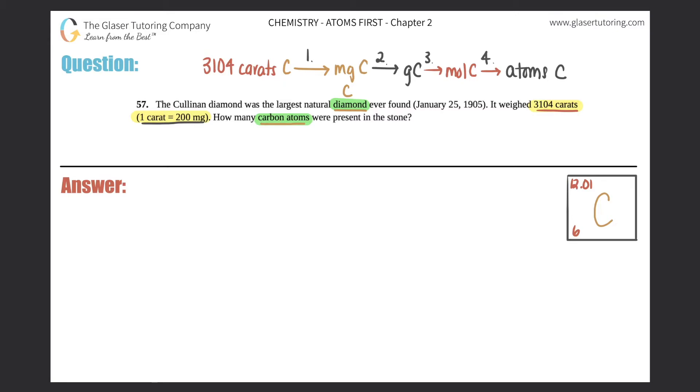Always start with what you're given: 3104 carats of C. With conversions, you always multiply by a ratio - carats of C on the bottom and what you want next on top. We're finding milligrams of carbon. The numbers come from the relationship they gave us: one carat equals 200 milligrams. This step is done.